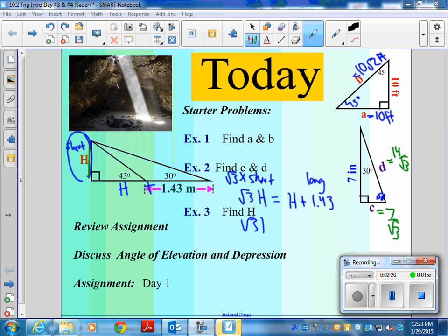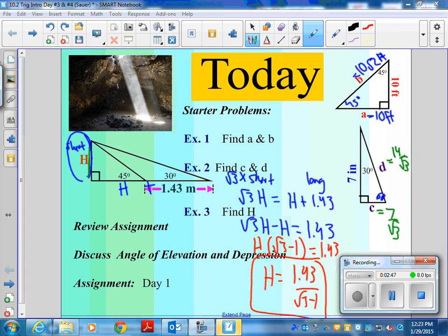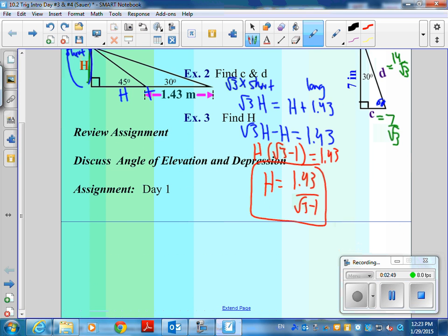Put the H's together. Factor out an H. And I'm going to get H is equal to 1.43 over square root of 3 minus 1. I don't care what the actual value is. Did anybody get something that looks like 1.43 over square root of 3 minus 1? Okay. Questions on that? Okay.